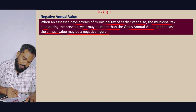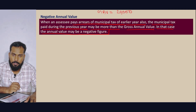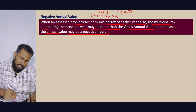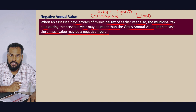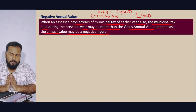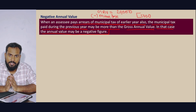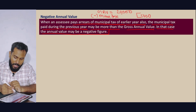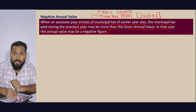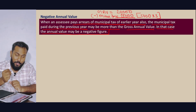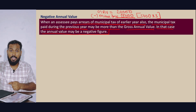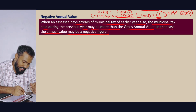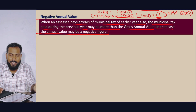For example, if the Gross Annual Value is 20,000 and the Municipal Tax paid is 25,000, the Municipal Tax is higher than the GAV. So Net Annual Value = 20,000 − 25,000 = negative 5,000. That is how Net Annual Value can become a minus figure.